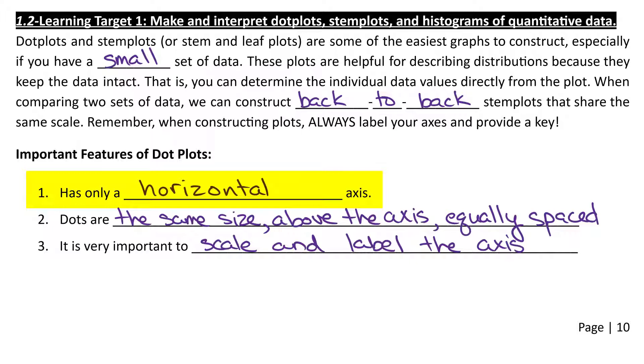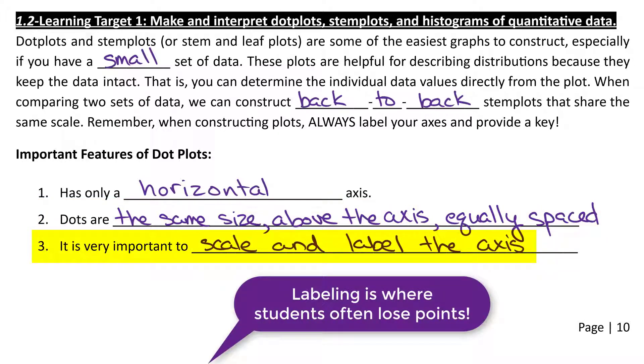And there's only three important features you really need to keep track of. Number one, your dot plots only have a horizontal axis, which again, makes them quick and easy to draw. Your dots need to be the same size, best you can, above the x-axis, or your horizontal axis, and equally spaced. It's also very important to scale and label your axis.